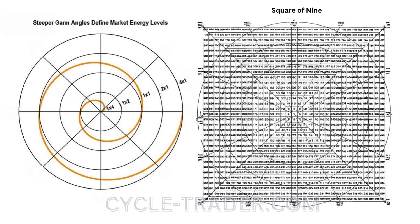GAN square of 9 is a similar model, with price and time defined by movements around the circles. Larger price swings happen on the circumference of the larger circles for the same time intervals, or angular displacement.